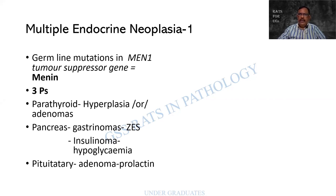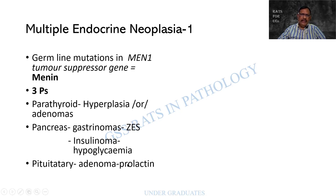MEN1 — Multiple Endocrine Neoplasia 1 — occurs due to a mutation in the tumor suppressor gene menin, and it is a germline mutation. The three P's: Parathyroid, Pancreas, and Pituitary. In the parathyroid: hyperplasia or adenoma. In the pancreas: gastrinoma leading to Zollinger-Ellison syndrome, or insulinoma leading to hypoglycemia. In the pituitary: a prolactin-secreting adenoma.